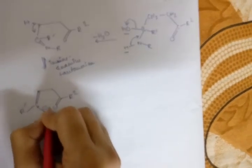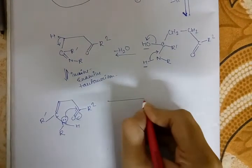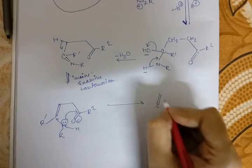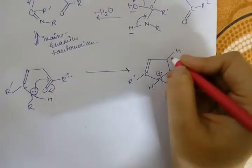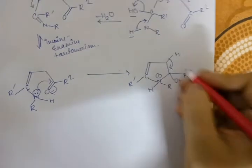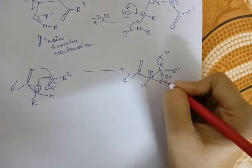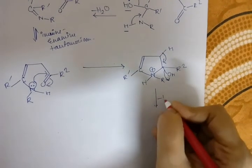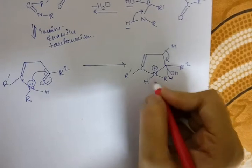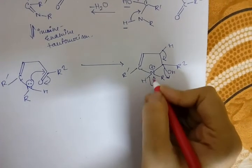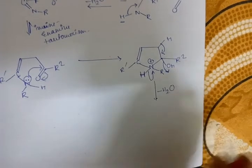Again, nitrogen will attack this carbonyl compound and this bond will rotate. Similarly, OH will form. Now this carbon-hydrogen bond will break and H+ will release. HO minus and H+ form H2O. Ultimately H2O will release. To neutralize this positive charge, this hydrogen breaks and H+ will release.